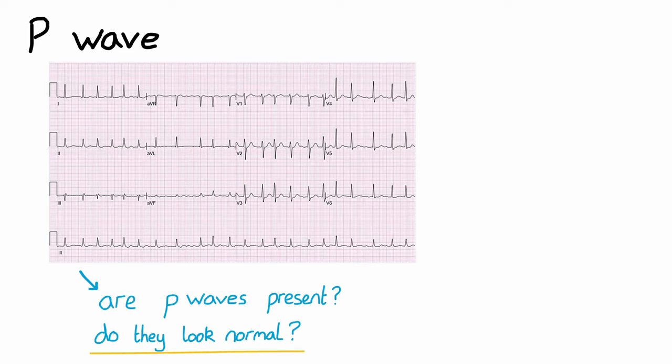The next ECG shows a pathological Q-wave, which is longer and taller than normal. Pathological Q-waves often represent an old myocardial infarction.